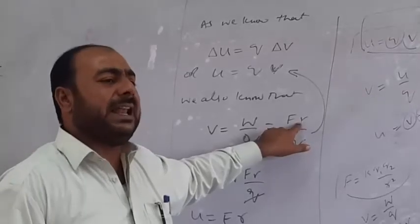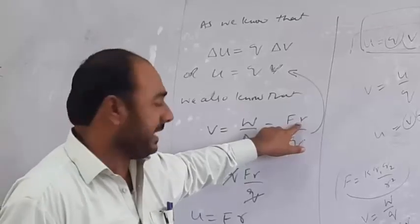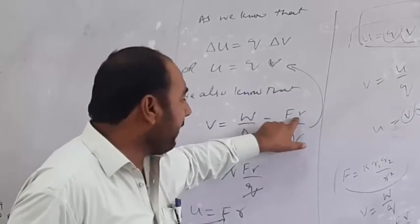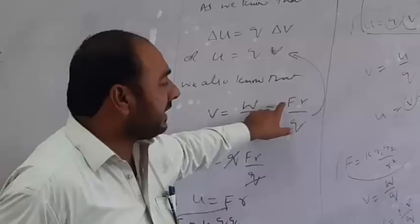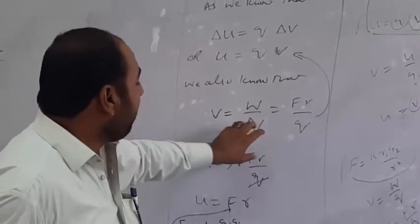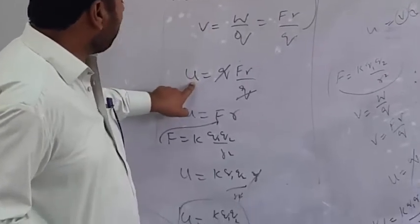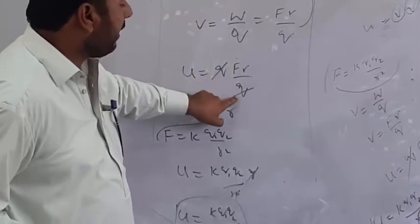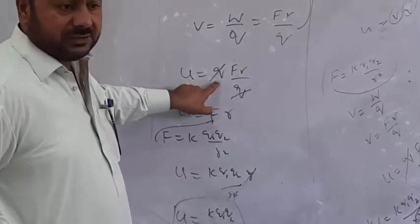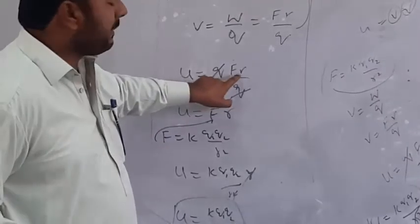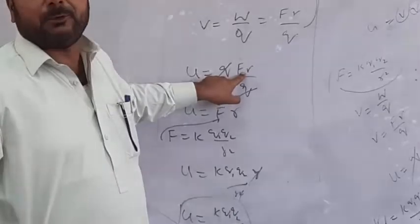Using the distance relation R, we have V equals FR divided by Q. Q cancels out, so potential difference equals FR.